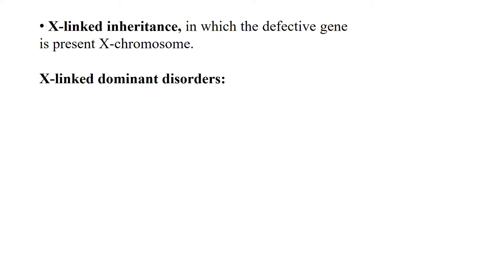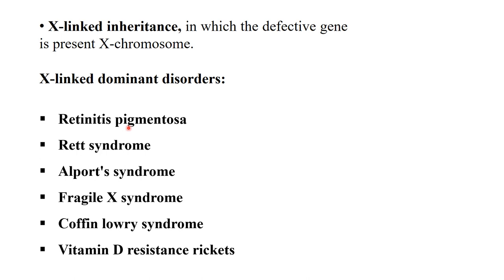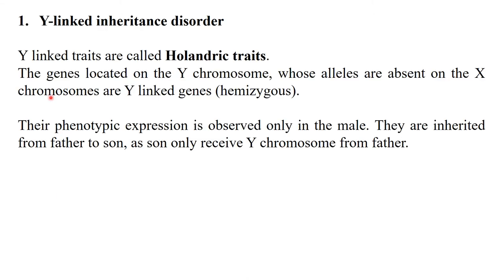X-linked disorders are disorders where the defective genes are found on the X chromosome. X-linked dominant disorders are expressed in the heterozygous condition. Examples include retinitis pigmentosa, Rett syndrome, Alport syndrome, fragile X syndrome, Coffin-Lowry syndrome, and vitamin D-resistant rickets. X-linked recessive disorders mainly occur in males. Examples include hemophilia, color blindness, severe combined immunodeficiency, Hunter's disease, muscular dystrophy, G6PD deficiency, and nephrogenic diabetes.